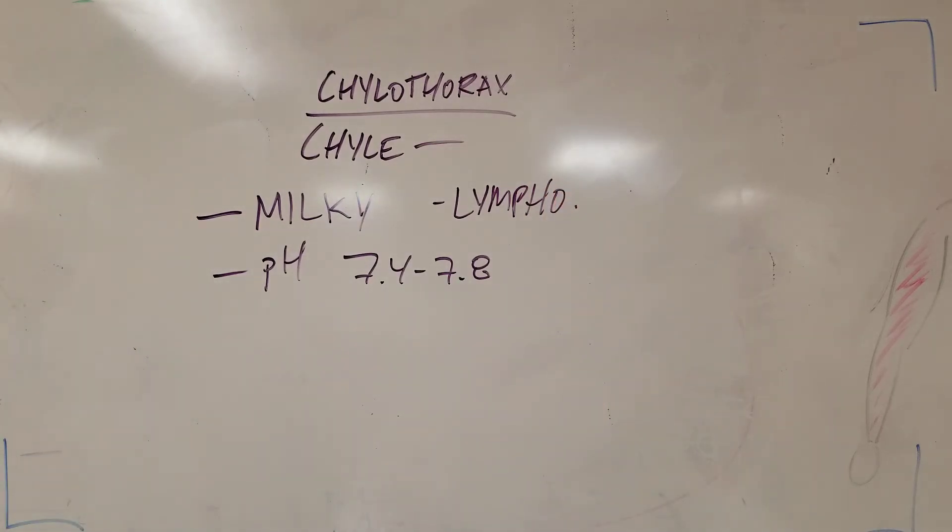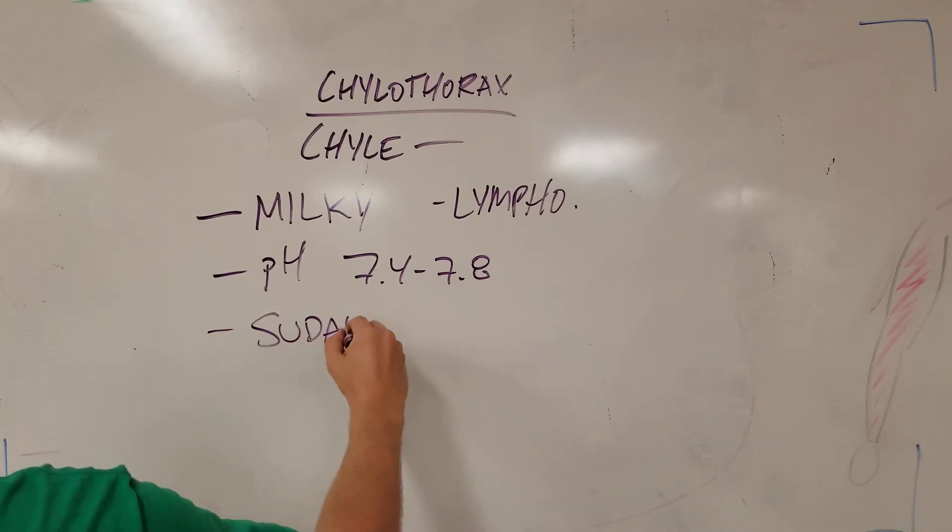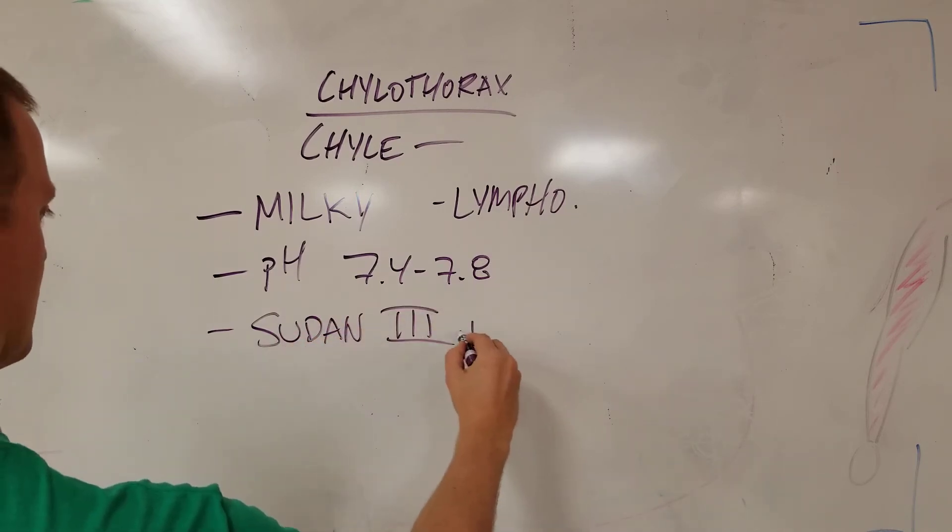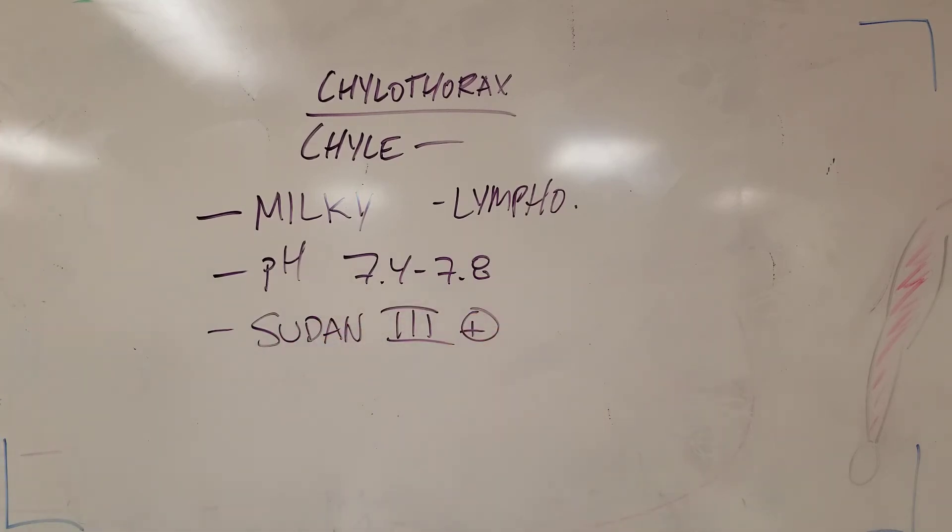You can send it for certain stains. The stain that's talked about a lot is Sudan 3. And that stains positive for fat. So you'd see a lot of fats in your chylothorax, and so it's positive on Sudan 3.